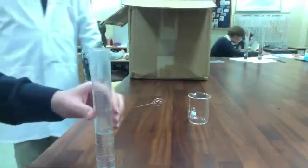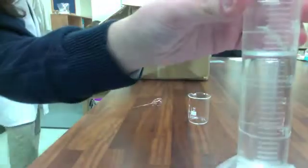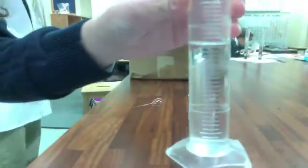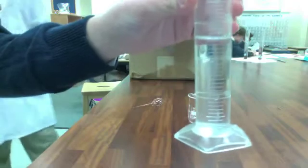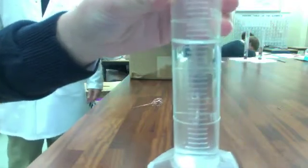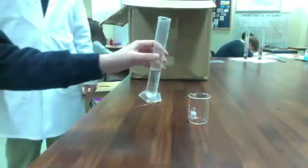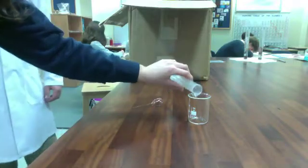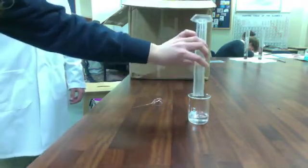All right, so what we have here is a solution of silver nitrate that we've carefully measured, and the volume is 25.8 milliliters. We're going to put that into a clean 100 milliliter beaker, pouring it all in.